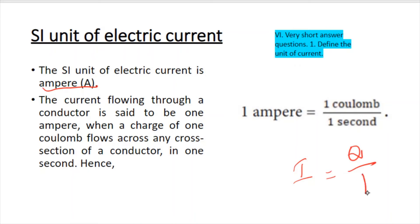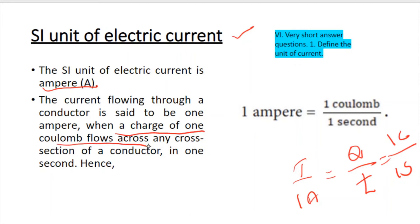The SI unit of electric current is ampere, represented by capital A. We know that I equals Q divided by T. So 1 ampere is defined as: when a charge of 1 coulomb flows across any cross-section of a conductor in 1 second, the current is 1 ampere. If I is 1 ampere, Q is 1 coulomb, and T is 1 second. This definition can be used for short answer questions asking to define the unit of current.